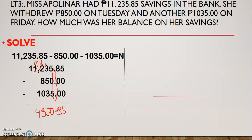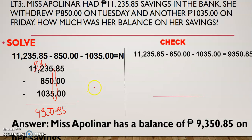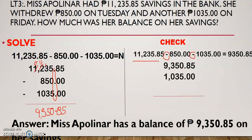So your final answer now is that Ms. Napolinar has a balance of 9,350.85 on her savings. And of course, the last step is you have to check if your answer is correct. To check, you just have to work backwards. Since the operation is subtraction, working backwards means you use addition — that is 9,350.85 plus 1,035 plus 850. The answer should be 11,235.85. Let us check.